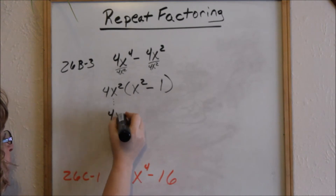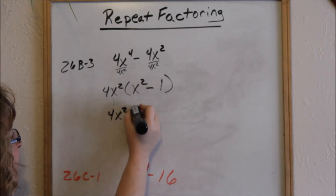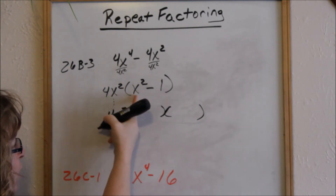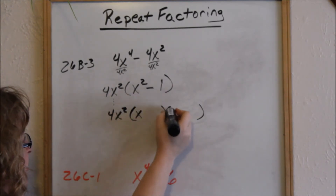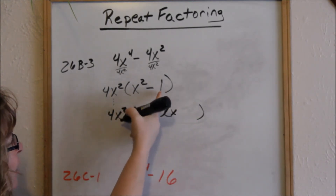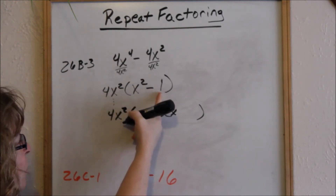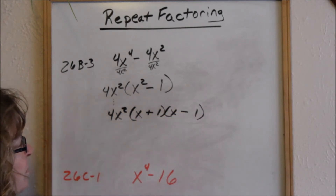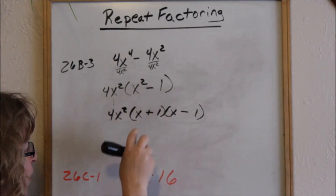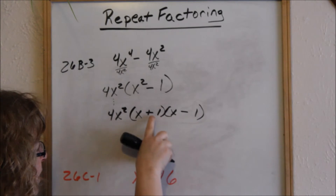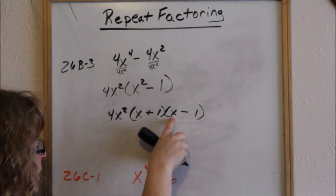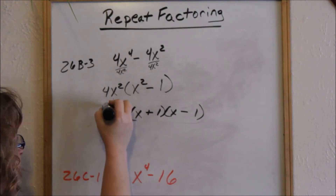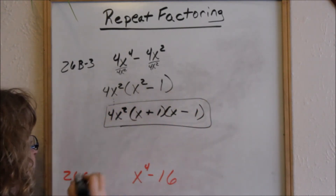Keep factoring — bring down your 4x squared. This is ready to factor as a difference of two squares. The square root of x squared is x, and the square root of 1 is 1. Factors are x and x, with 1 being a plus and 1 being a minus — that way you get a negative x and a positive x which cancel. So this factors to 4x squared times (x + 1)(x − 1). These are your factors for that.